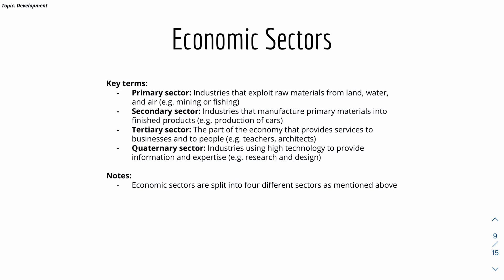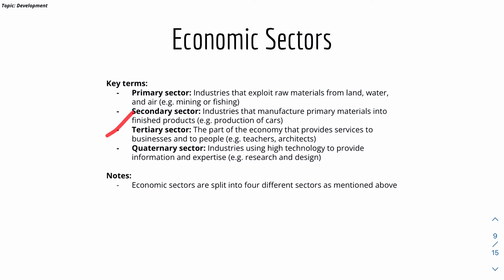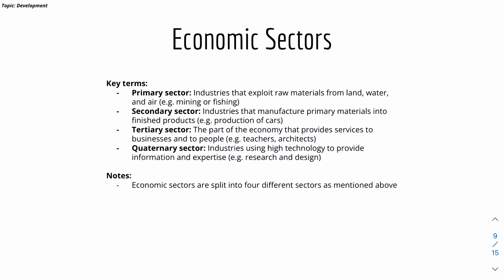Then we have different economic sectors: primary, secondary, tertiary, and quaternary. The primary sector involves industries that exploit raw materials from land, water, and air — for example, mining or fishing. The secondary sector involves manufacturing primary materials into finished products — taking raw materials and turning them into something useful. The tertiary sector provides services to businesses and people — for example, teachers and architects. The quaternary sector uses higher technology to provide information and expertise — for example, R&D, or research and development.